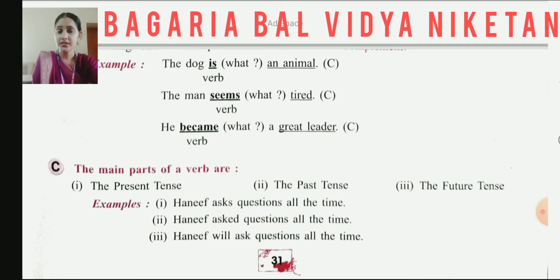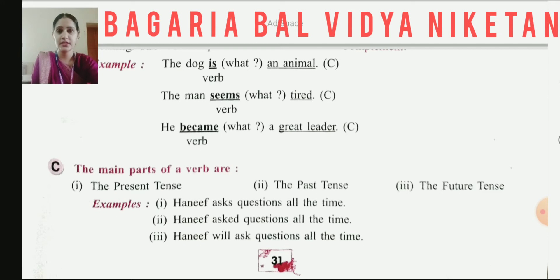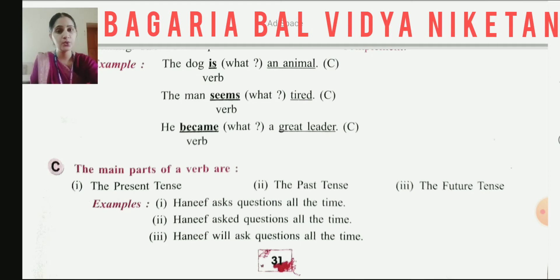Then we have the main parts of a verb, which remain in three parts: the first is present, the second is past, and the third is future. You have learned about these three types of verbs in your previous classes also. For example: ask, asked, and will ask — these represent time, because tense represents time, and the main role is to show that.